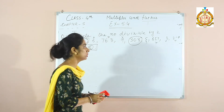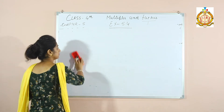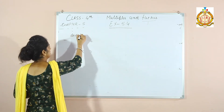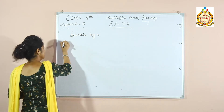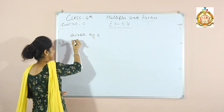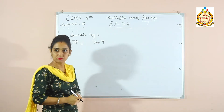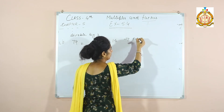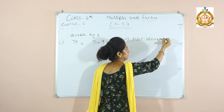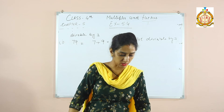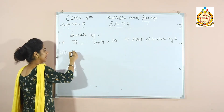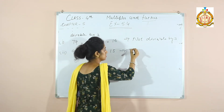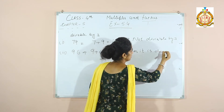Question number 2: circle the numbers divisible by 3. First number is 79: 7+9=16. Is 16 divisible by 3? No, so 79 is not divisible by 3. Next is 96: 9+6=15. Is 15 divisible by 3? Yes, so 96 is divisible by 3.